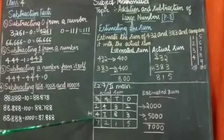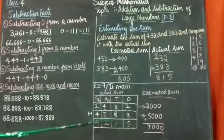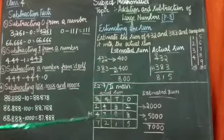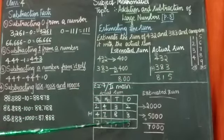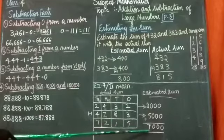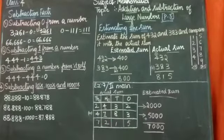This sum what we are getting, this also we can estimate. That is comparing the hundreds place here. Here 2, 2 is again lesser than 5. If I estimate this 7215, the estimated sum will be 7000. Did you get students?